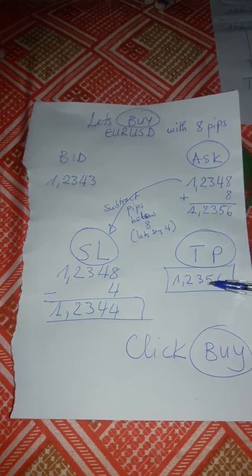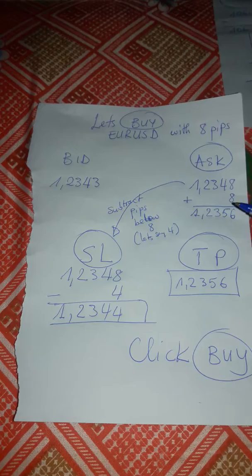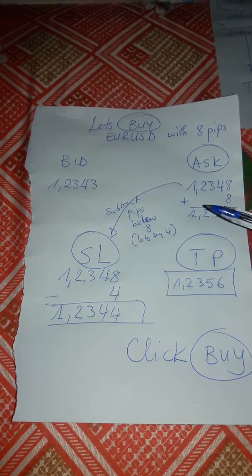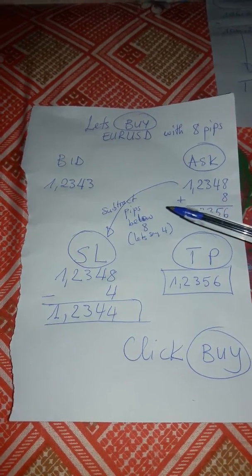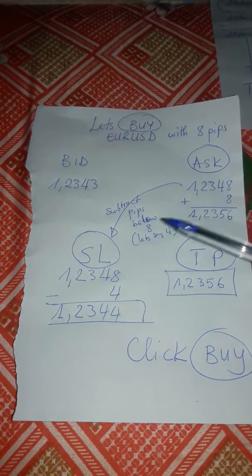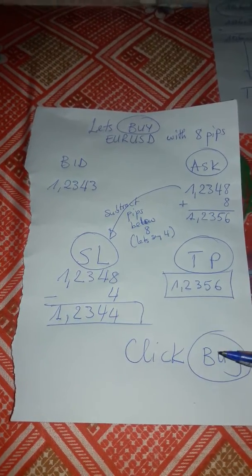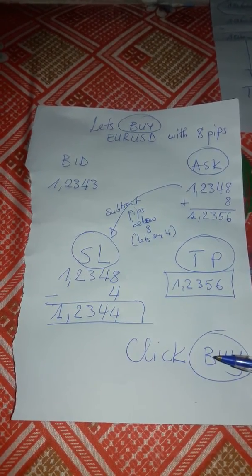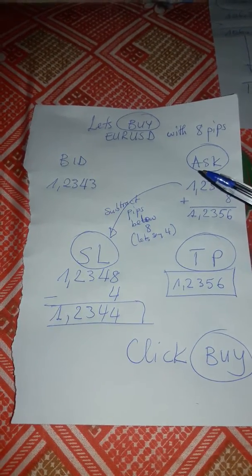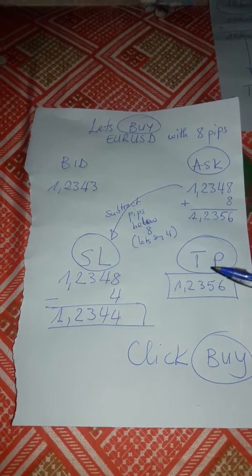To have a stop loss, we make sure that the value should not be more than 8. So you look for a value which is less — let's say we subtract 4 pips from this same value, so that when we subtract it will give us our stop loss. And we click buy because buy will be highlighted.